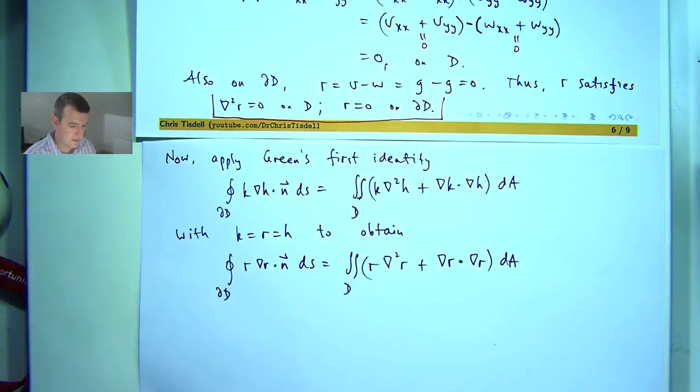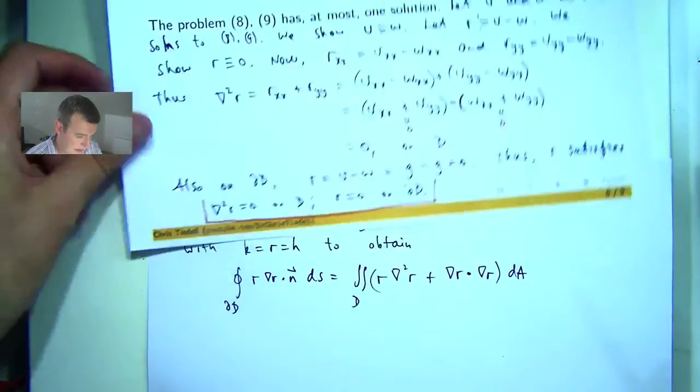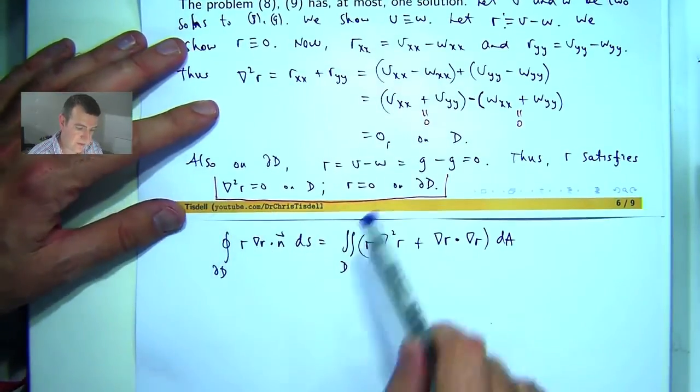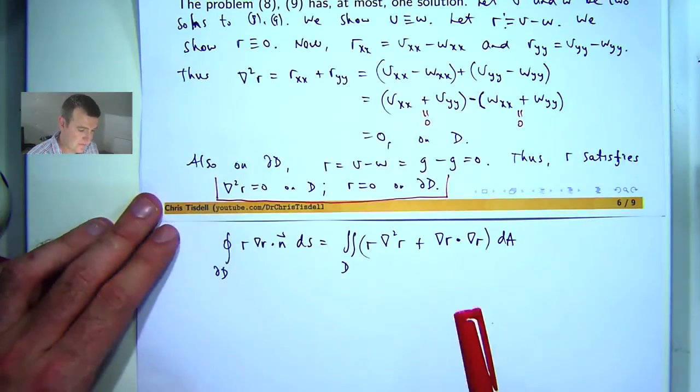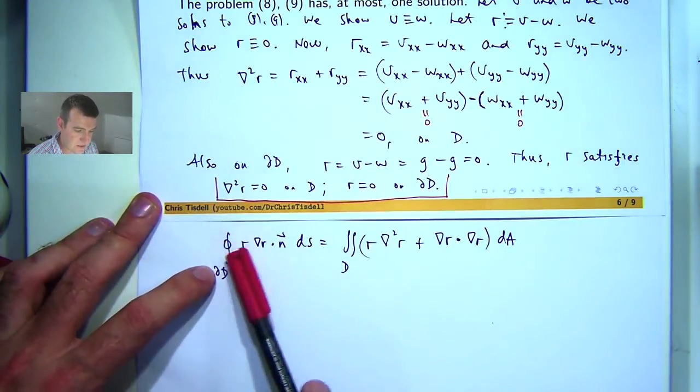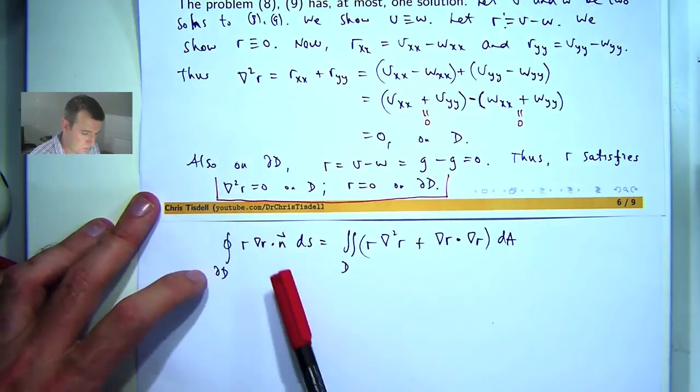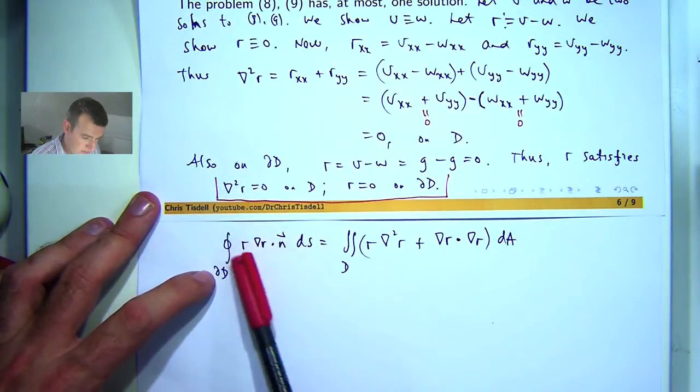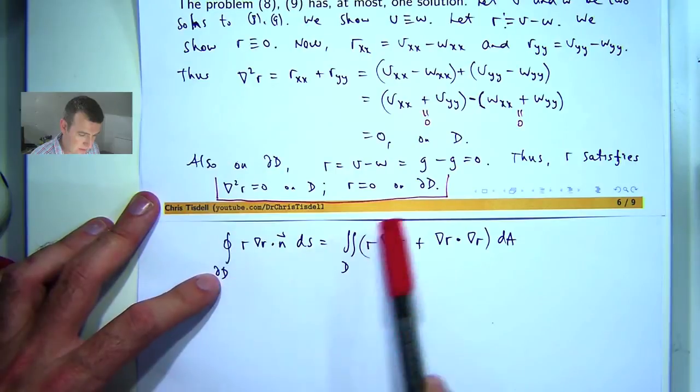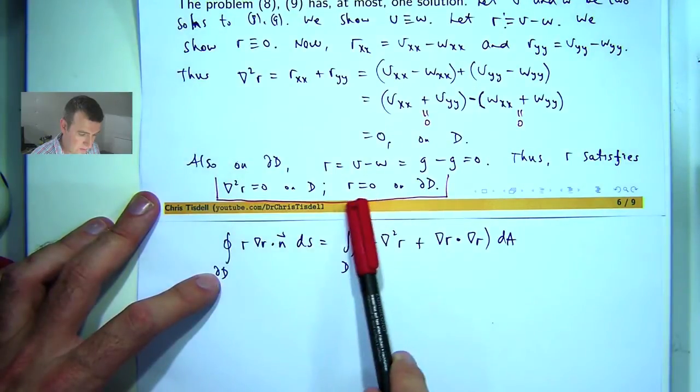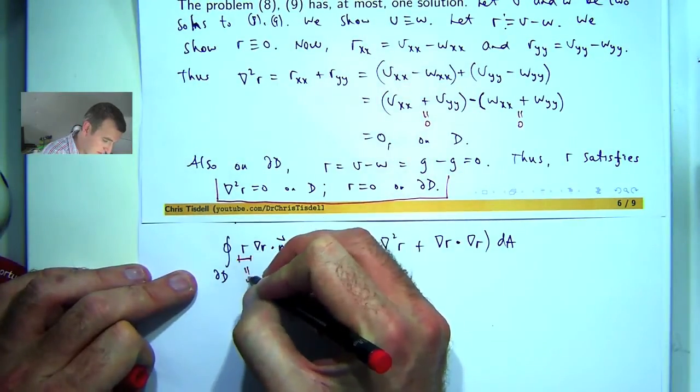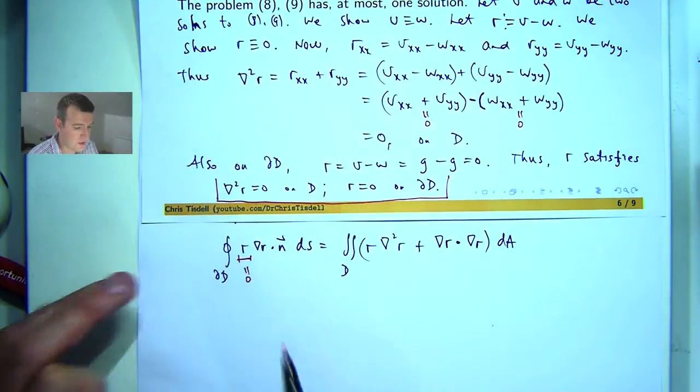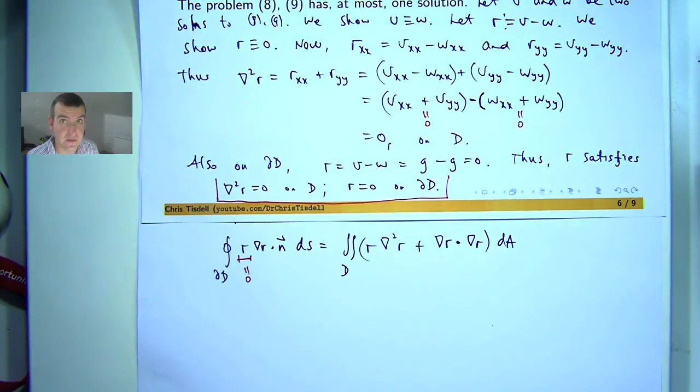So now we can go back to the boundary value problem that we constructed for R and get some simplifications here. Firstly, remember this integral is around the boundary of R, this is a line integral. What do we notice about the integrand along the boundary? Well, R is equal to 0, so this is equal to 0 on the boundary. So the whole integrand must be 0. What it means is the left hand side disappears or vanishes.